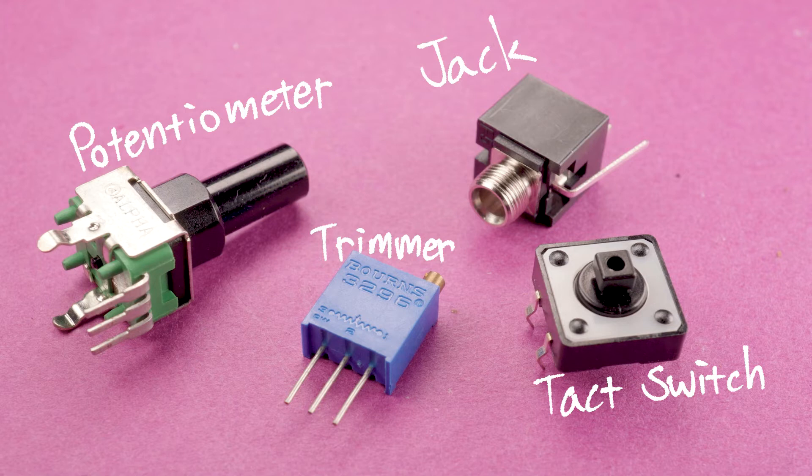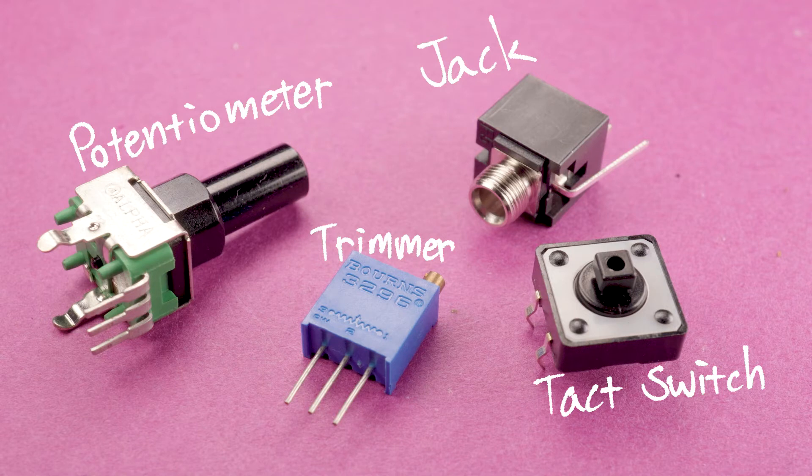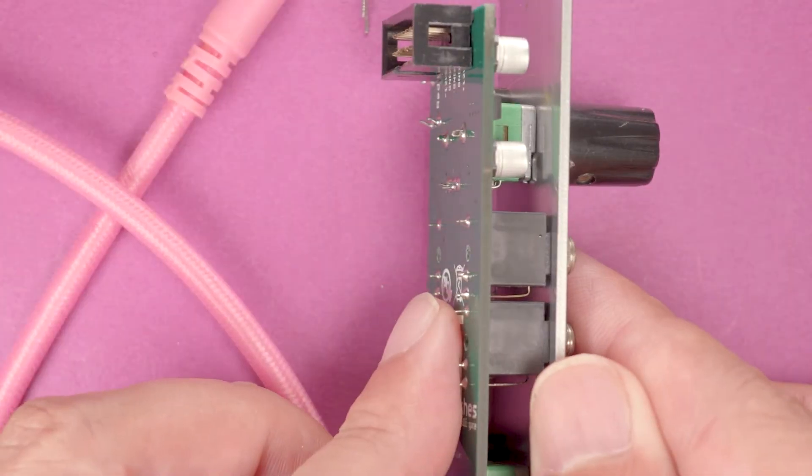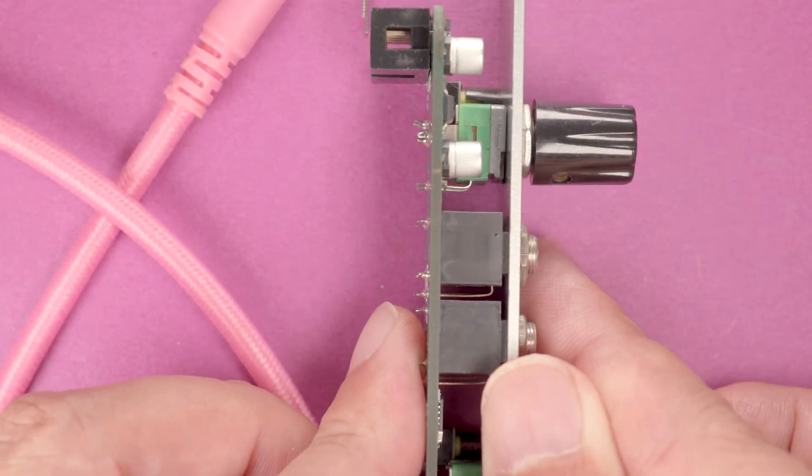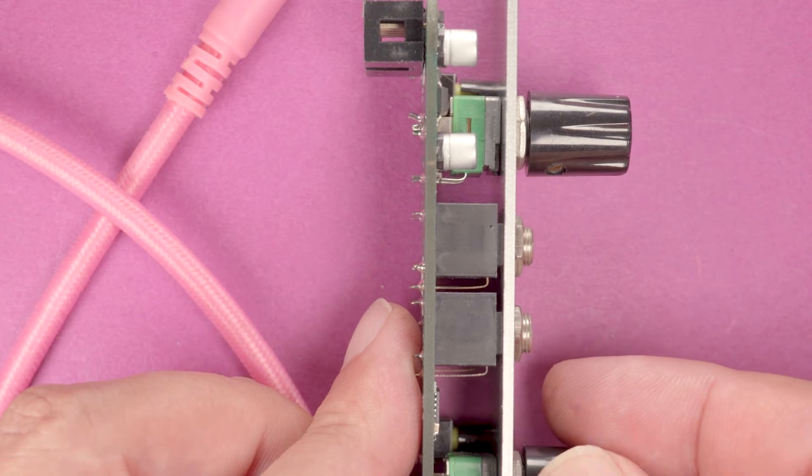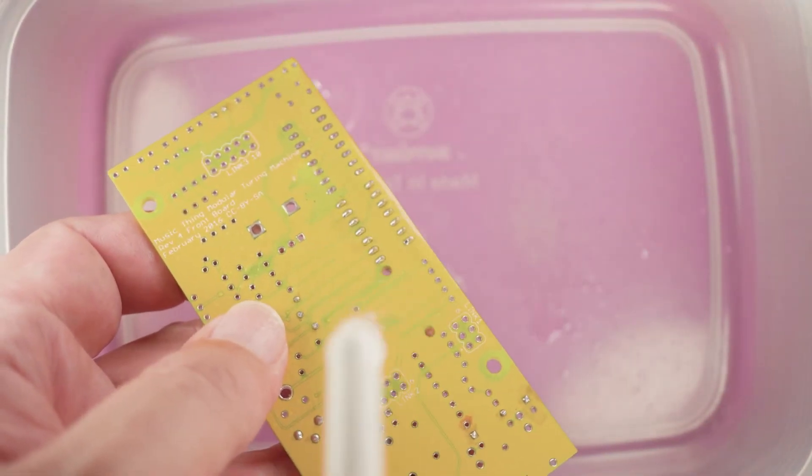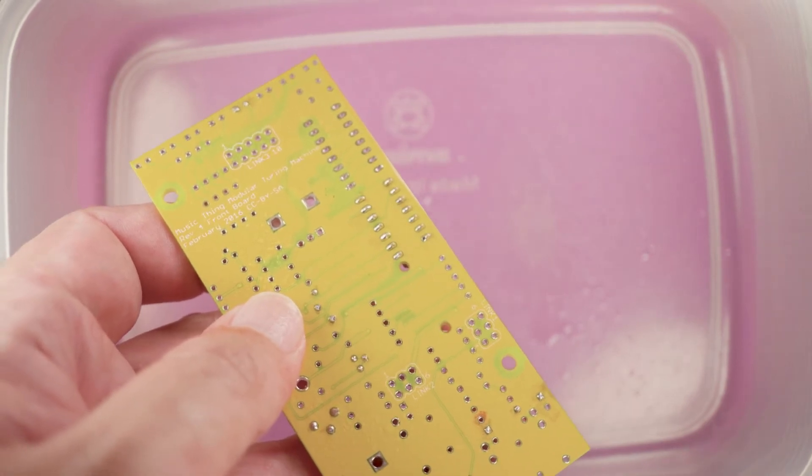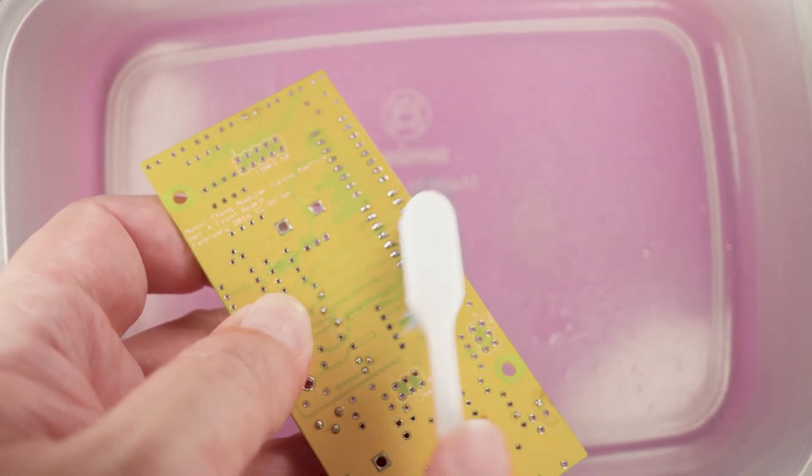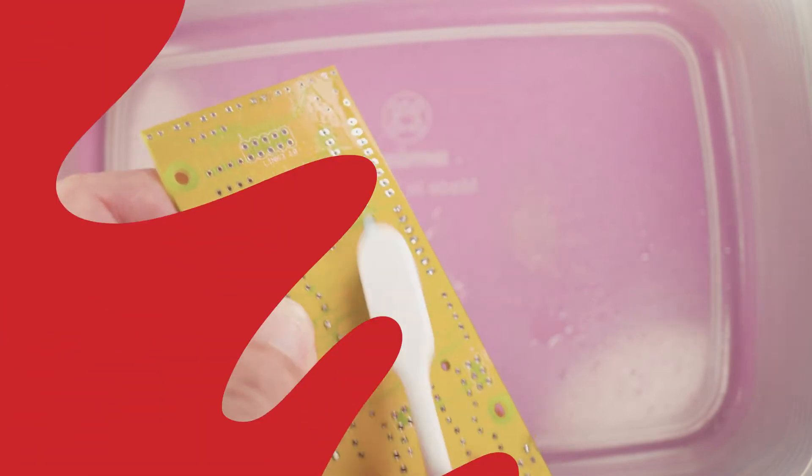Now, these are the components that you would probably want to wait until the very end of your build to install. There's a couple of reasons for that. The main reason is you want to make sure that if your project has an enclosure, you want to make sure you have the proper clearance for that and that you're not straining any of those parts. Also, if you plan on cleaning off the flux residue from your solder, you don't want that stuff getting inside of those components.